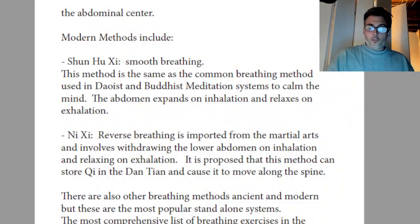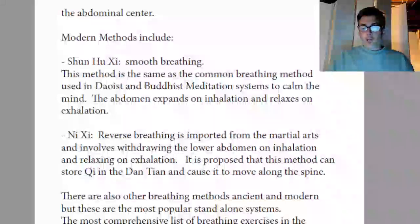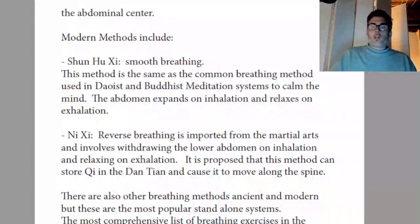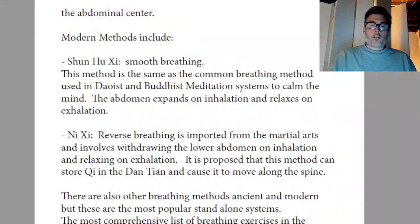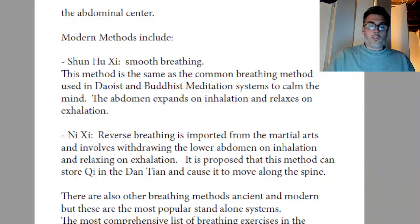The only Daoist text I've seen that mentions reverse breathing is the Yin Shi Zi Jing Zuo Lun — Yin Shi Zi's discussion of quiet sitting by Jiang Weiqiao — which is a very modern and syncretic text. From the martial arts or modern Qigong context, when you do reverse breathing, on the in-breath you withdraw the abdomen and slightly pull up the perineum and anus, and on the out-breath you relax them. If you're well-read about Neidan, you might point to the four-part technique in the Wuliu school or texts like Xingming Guizhi, where they talk about raising the anus and sucking in the breath.